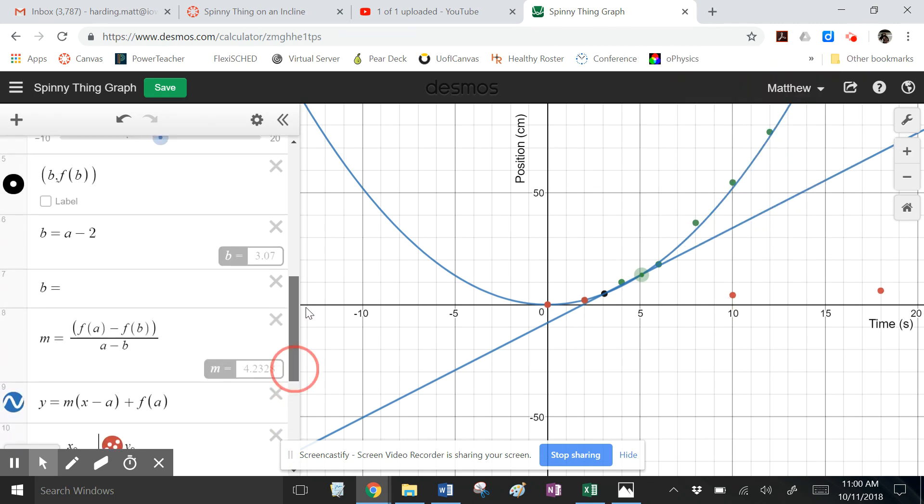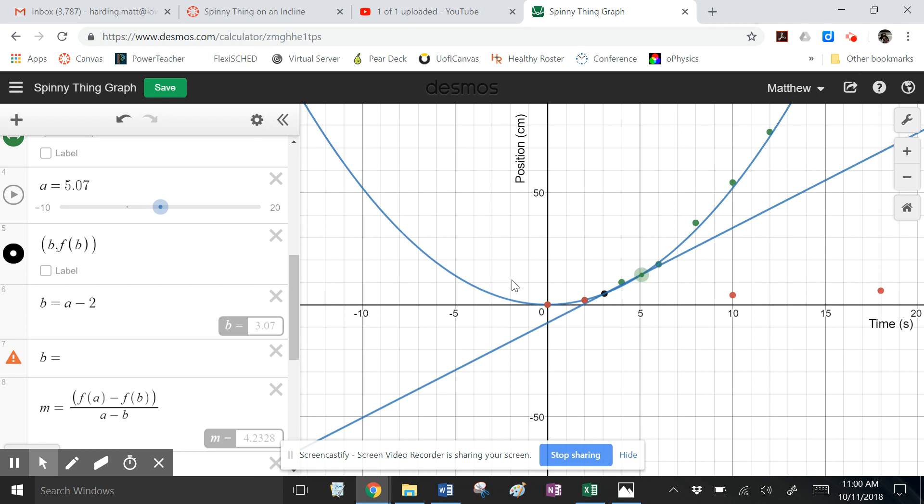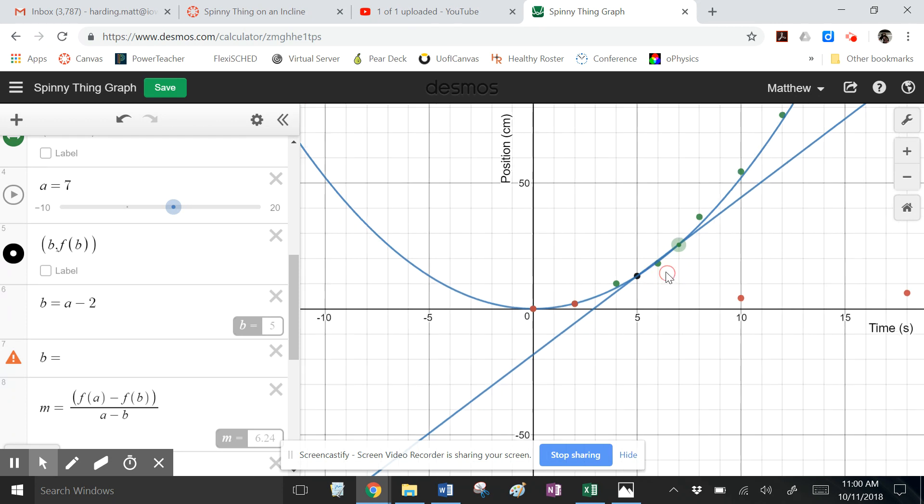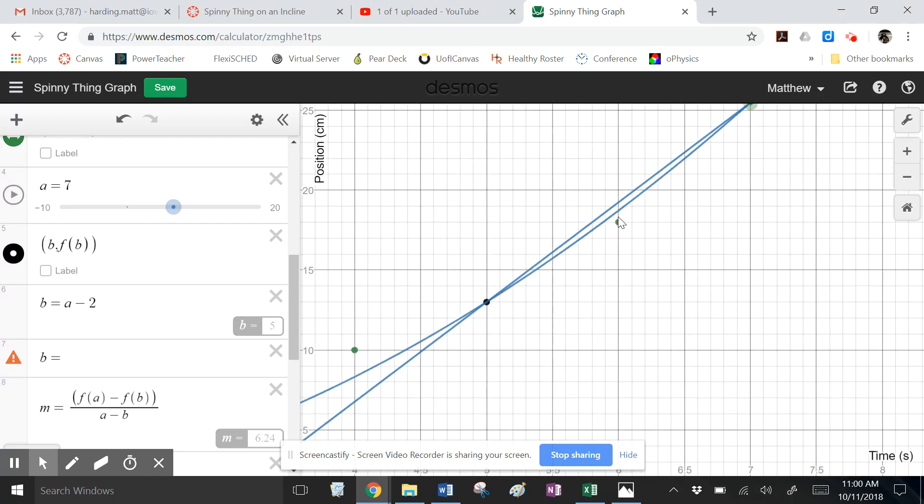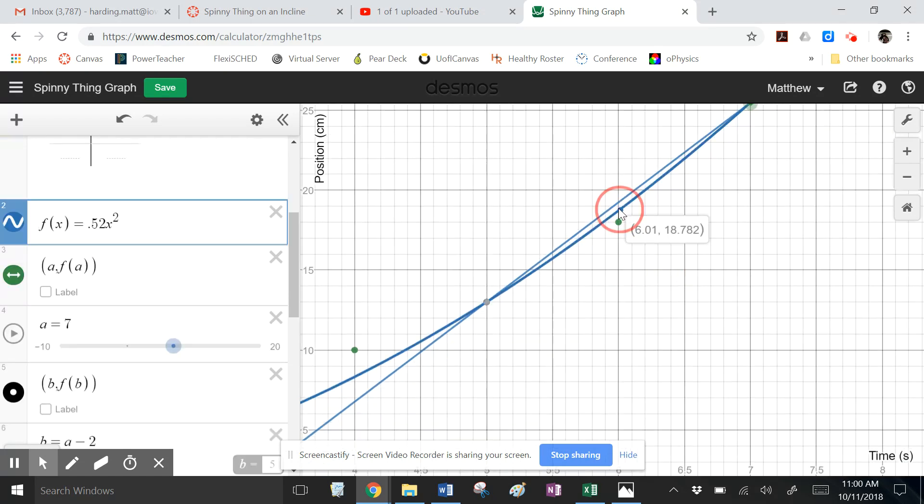So again, to show you what I'm doing, I went back to B equals A minus 2, so that there's always a two-second difference between A and B. And now if I want to find the velocity at what would be times six seconds, I'm going to put A at as close to seven as I can get it. That's going to put B at five. And I get the slope. Let's see how the slope of my secant line really is pretty close to parallel to the slope of my curve at that point.